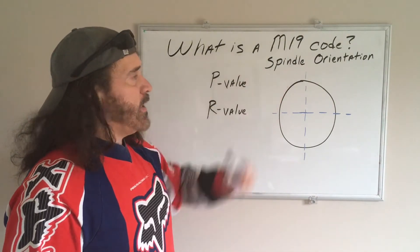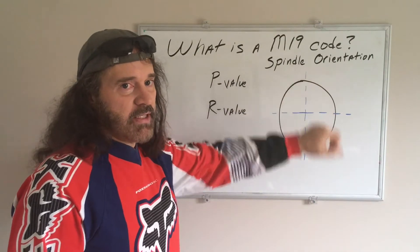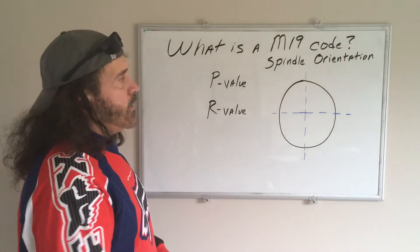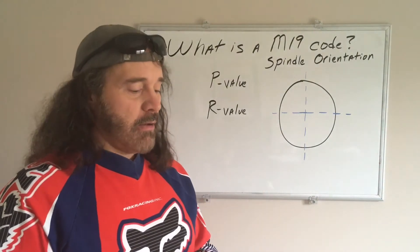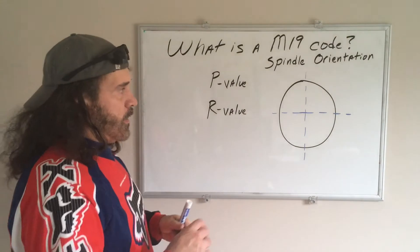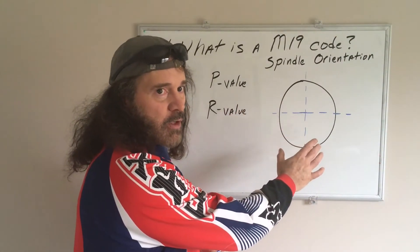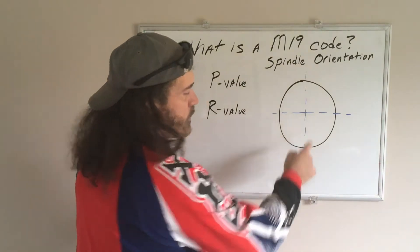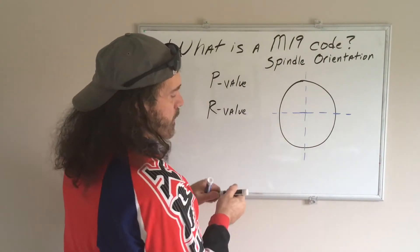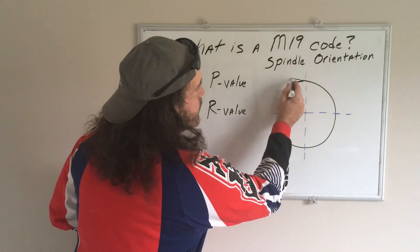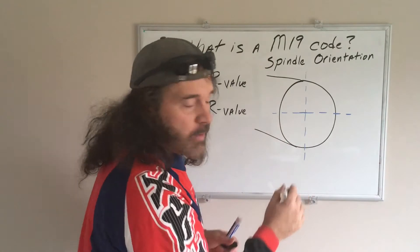What does M19 stand for? It's called a spindle orientation. What that is — if you're looking at the front of your part, say this is the part you faced and it's rotating like that.